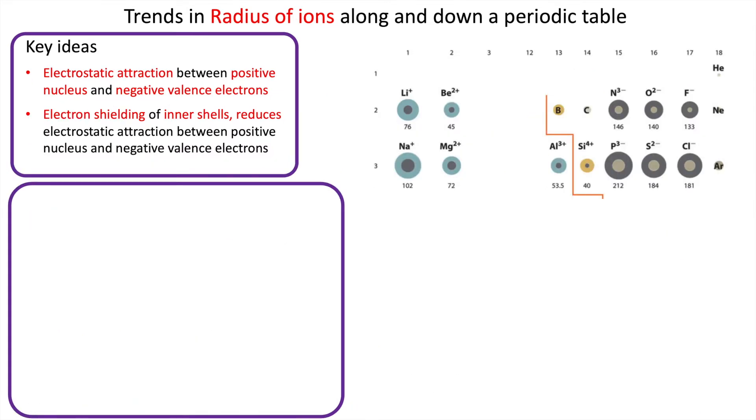So what about the trends in the radius of ions along a period and down a group? Well, the ideas are nearly identical except you've got to explain one more thing. You can see that as you go along the period, the radius of the ions drops, then it suddenly increases again and then drops again. And this is where we change from a metal to a non-metal. And we can look at period three to really explain this.